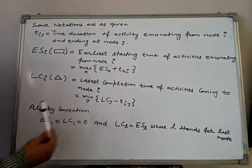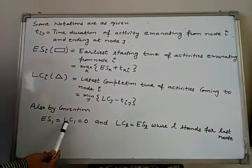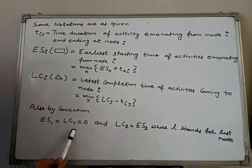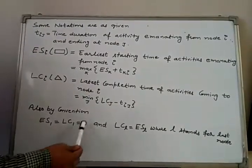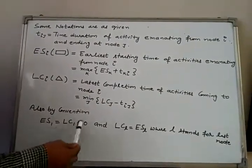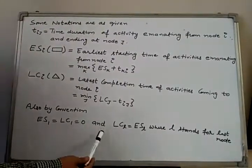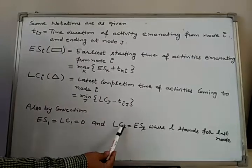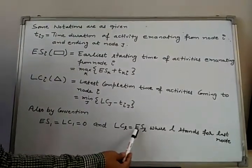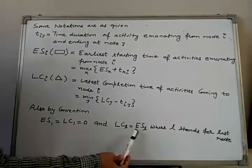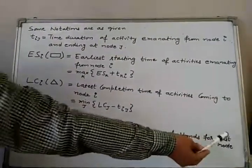By convention, we fix the earliest start time of the first node equal to the latest completion time of the first node, equal to 0. That is, earliest start time of the first node and latest completion time of the first node is 0. And the latest completion time of the last node is equal to the earliest start time of the last node, where small L stands for the last node.